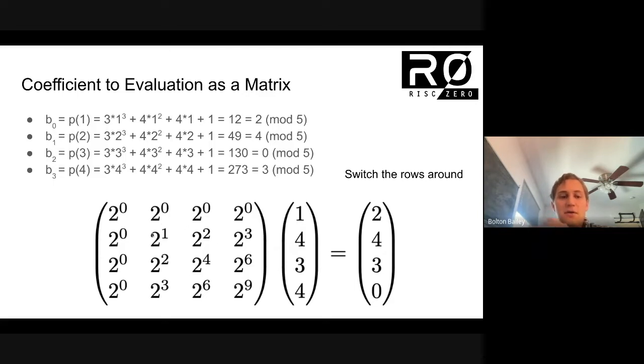So one is two to the zero, two is two to the one, four is two to the two, and three is two to the three.